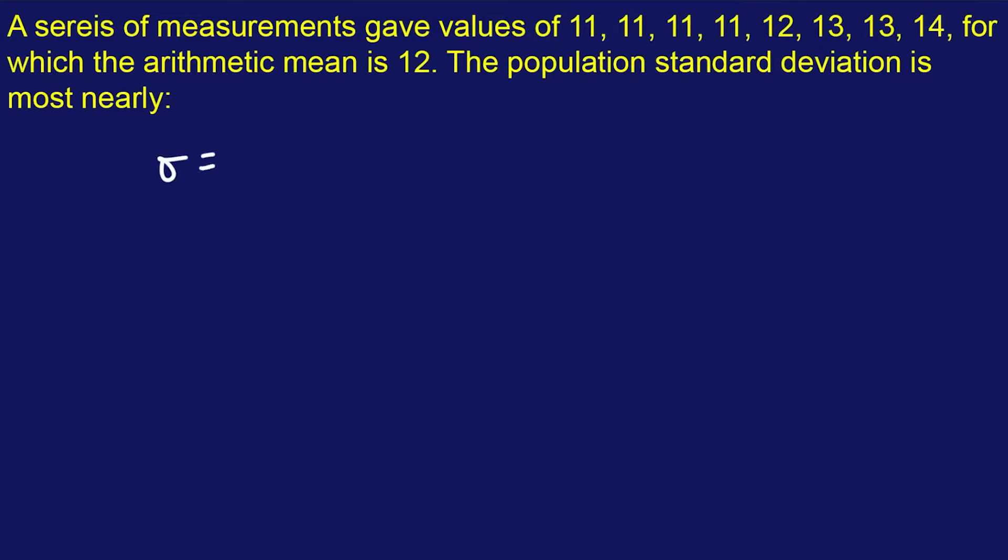So we're going to do 1 over n. N is the number of numbers in your set, which is going to be 8 for this problem. And then we're going to do the sum of all those different iterations of those numbers in that set by doing x1 minus μ squared. That probably made zero sense, but you'll see what I mean.